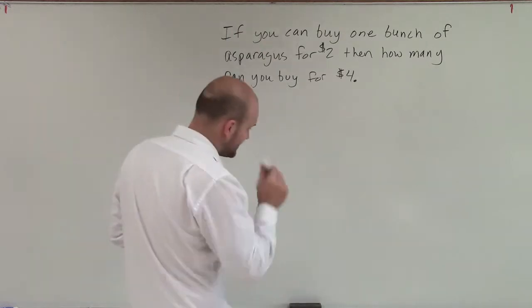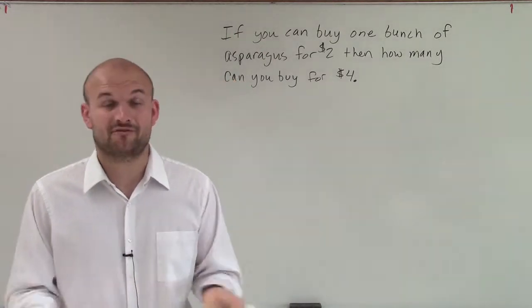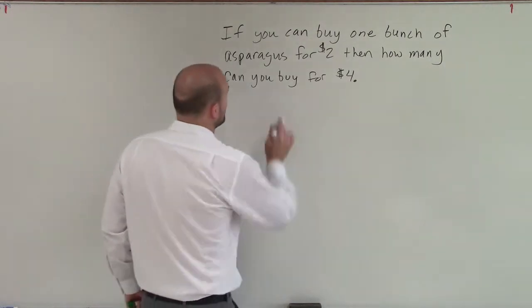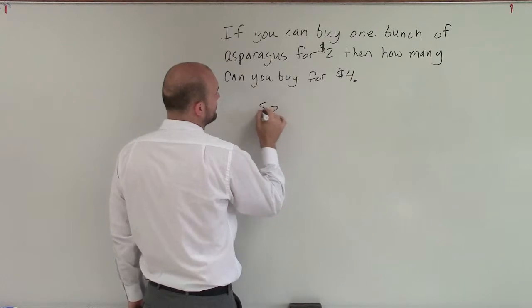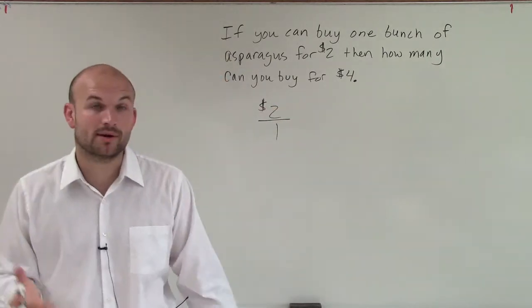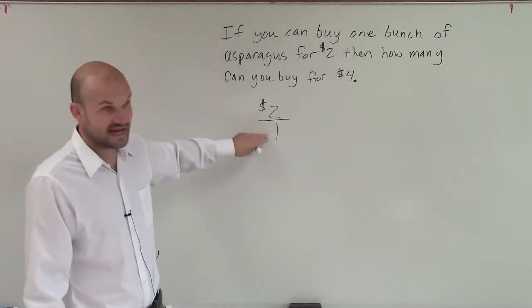When doing a problem like this, one important thing to do is create a fraction, a kind of ratio. So what it says is for $2, I can buy one bunch of asparagus. So that is going to be my ratio. For every $2, I can buy one bag.